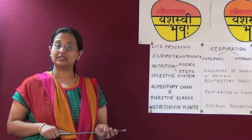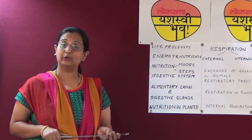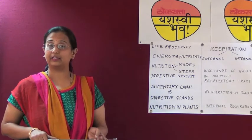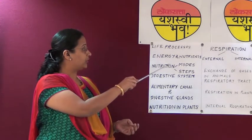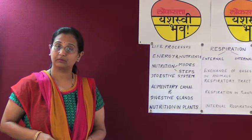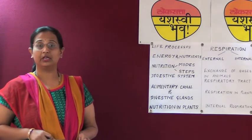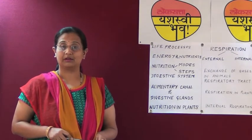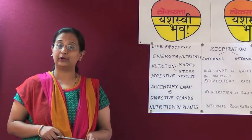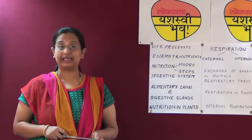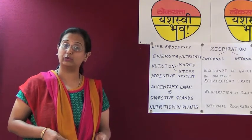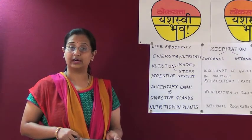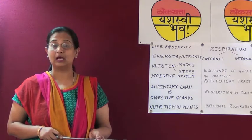Nutrition is the process in which a living organism obtains food and utilizes it. Two modes of nutrition seen in living organisms are autotrophic nutrition and heterotrophic nutrition. In autotrophic nutrition, living organisms synthesize their own food — for example, green plants, which are called autotrophs. In heterotrophic nutrition, animals depend on other organisms for their food. Examples include mushrooms, fungi, yeast, human beings, animals, and parasites.